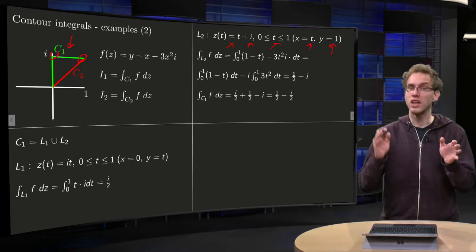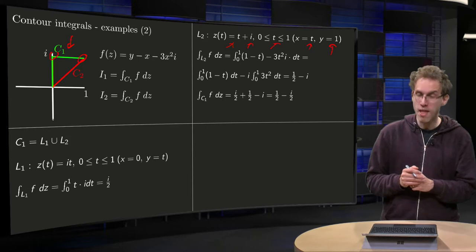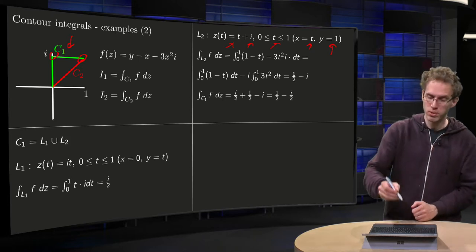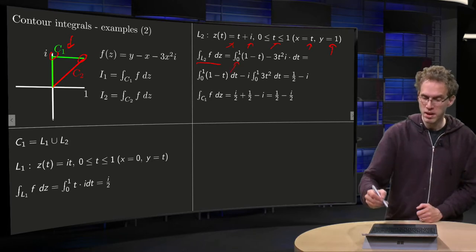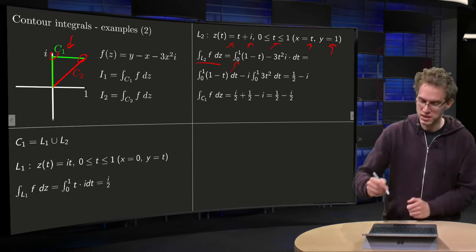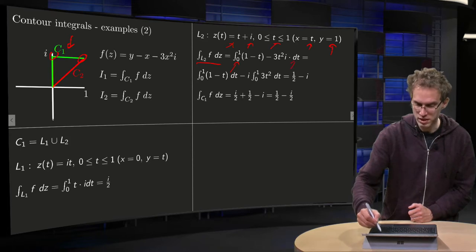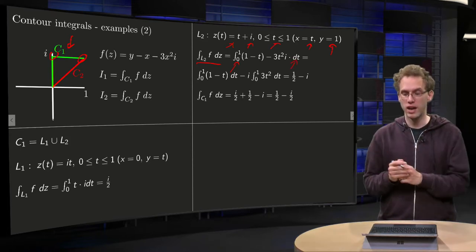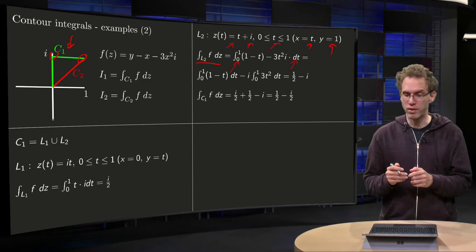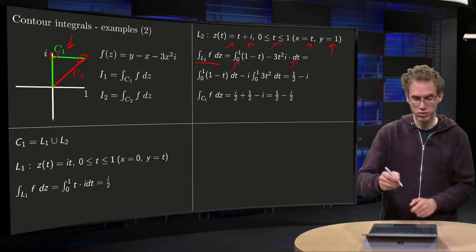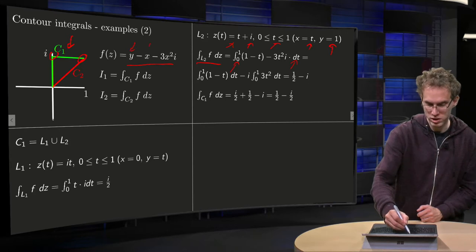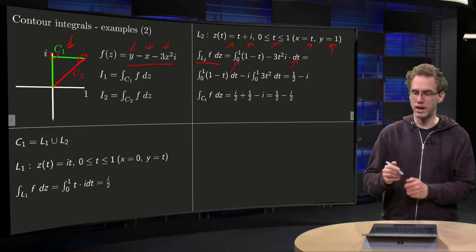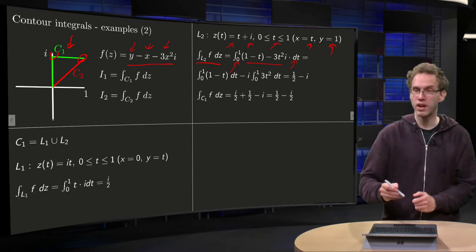So both x and y are real. And we compute the integral along L2 f dz, so t again between 0 and 1, and for the dz you just get dt. What about the function? Well, we have to plug in x equals t and y equals 1 into our function over here, so we get 1 minus t minus 3t squared times i, exactly what we have over there.